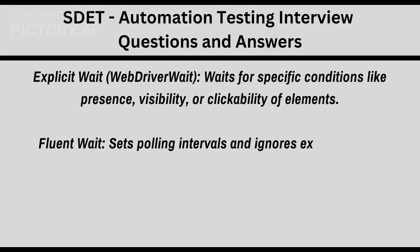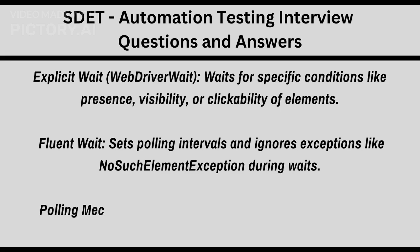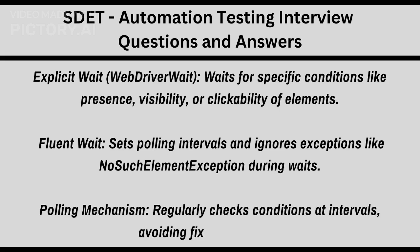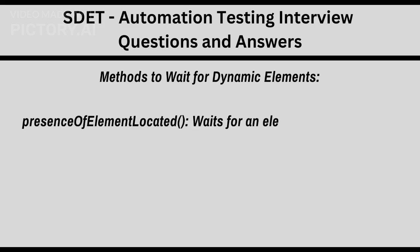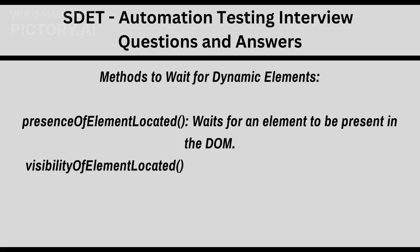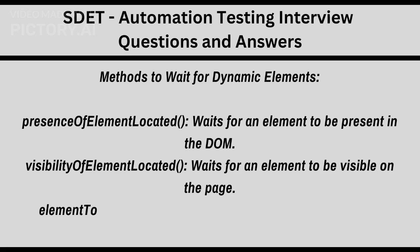Fluent wait sets polling intervals and ignores exceptions like NoSuchElementException during waits. The polling mechanism regularly checks conditions at intervals, avoiding fixed time waits. Key methods include: presenceOfElementLocated — waits for an element to be present in the DOM; visibilityOfElementLocated — waits for an element to be visible on the page; and elementToBeClickable — waits for an element to be clickable.